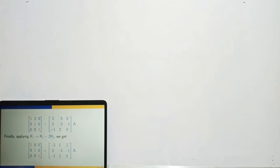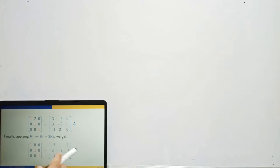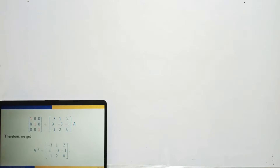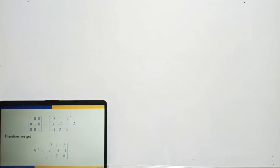Finally, the left-hand side matrix becomes the identity matrix — the RREF of A. So the right-hand side matrix B satisfies B·A = I, meaning this matrix is A⁻¹, the inverse of A. This is the Gauss-Jordan method — it's the game of row operations.